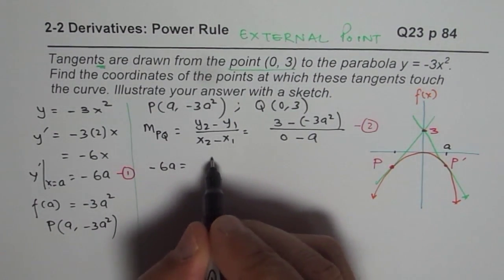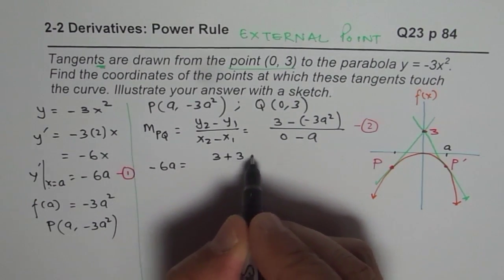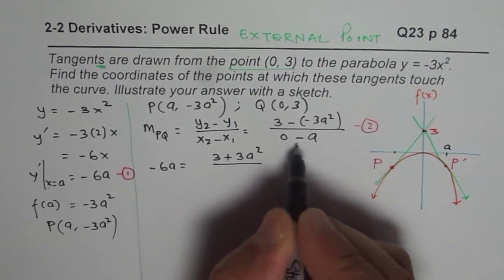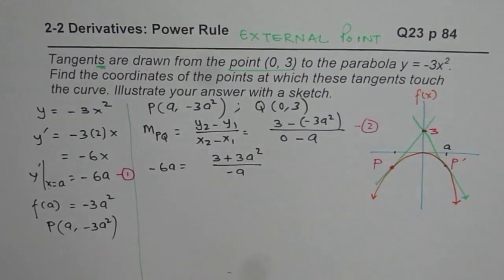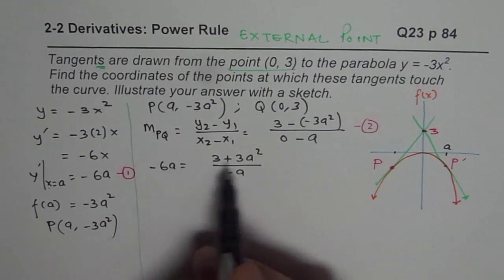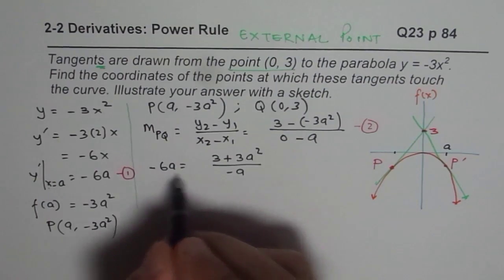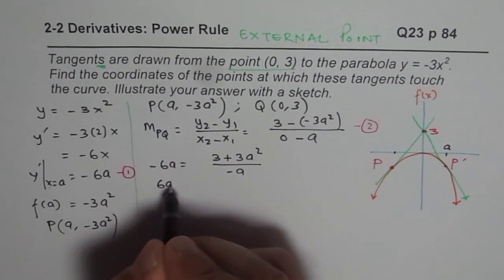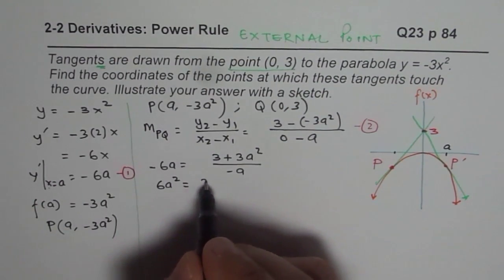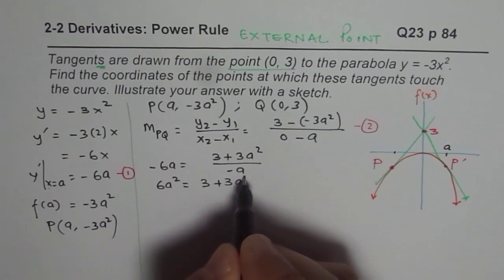So we can now cross multiply and solve for A. When you cross multiply, you get minus and minus is plus. So we get 6a² = 3 + 3a². Let's take it on this side.